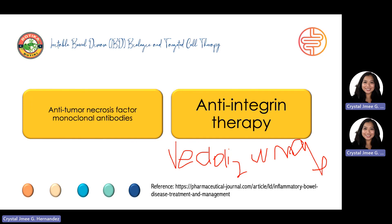This drug has a theoretical risk of progressive multifocal leukoencephalopathy, so pharmacists should monitor and counsel patients on the following: new or worsening neurological signs and symptoms such as progressive weakness on one side of the body or clumsiness of the limbs, vision disturbances, or a change in thinking, memory, and orientation leading to confusion and personality changes. Patients displaying any signs and symptoms suggestive of PML should be immediately referred to a neurology team, and vedolizumab should be withheld.